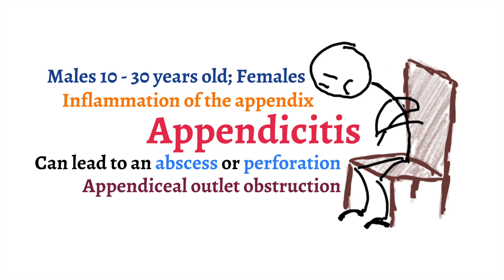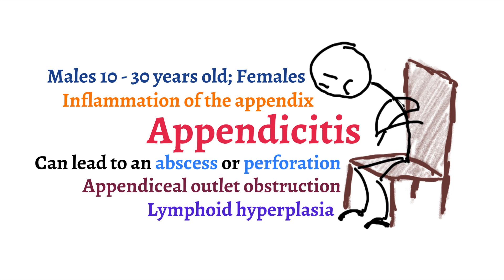Obstruction leads to increased pressure in the appendix and decreases the outflow of lymph fluid. The increased pressure leads to ischemia due to clot formation and stasis in the small blood vessels of the appendix. Obstruction is believed to be the cause in older patients who develop appendicitis, while younger patients are believed to develop appendicitis due to obstruction from activation of lymphoid tissue from infection.